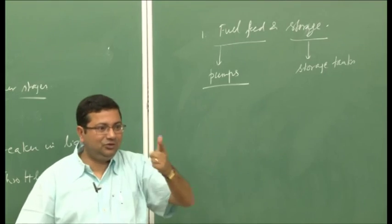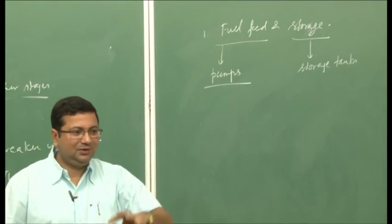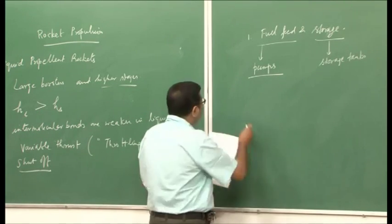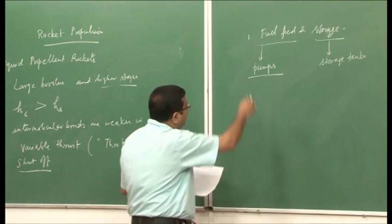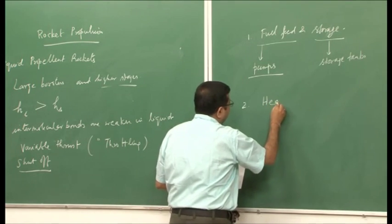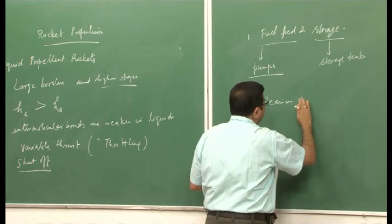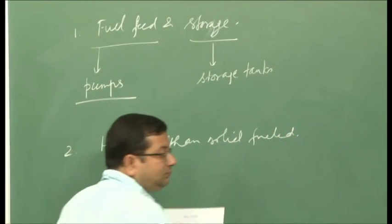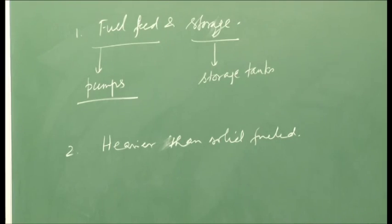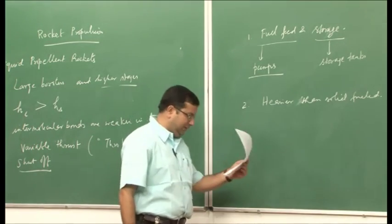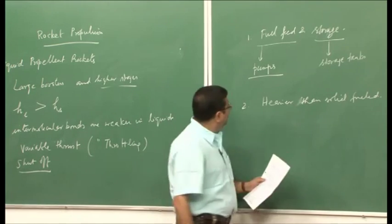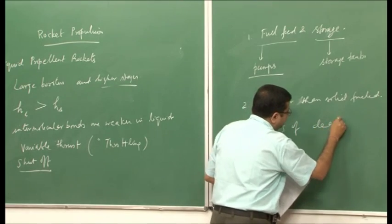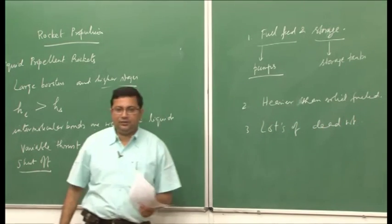There are also issues with maintaining equal propellant distribution across the many injectors. Because of the feed system and storage requirements, liquid propellant rockets are heavier than solid propellant rockets for the same amount of thrust. All this dead weight in the liquid feed system is a significant bottleneck. So liquid propellant rockets are heavier and more complex.